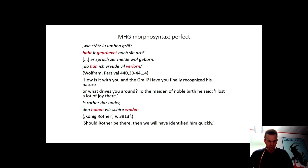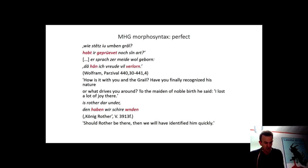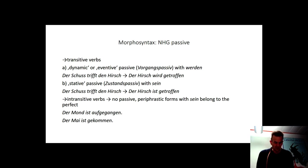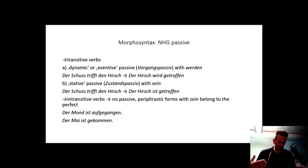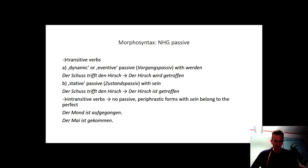Let us now turn to voice and how it is realized in Middle High German. It must be said at the outset that German forms its passive analytically from the very beginning and not synthetically, like Latin or Gothic. The modern language forms of the periphrastic passive have existed since Old High German. Transitive verbs form the so-called eventive or dynamic passive with the auxiliary verb werden, as in 'der Hirsch wird getroffen', and the stative passive with sein, as in 'der Hirsch ist getroffen'. Periphrastic verb forms can also be formed from intransitive verbs with the auxiliary verb sein, but these are understood not as passive forms but as perfect forms: 'Der Mai ist gekommen, der Mond ist aufgegangen.'